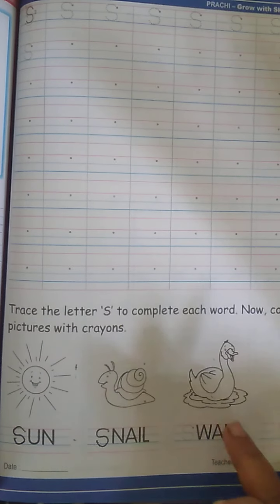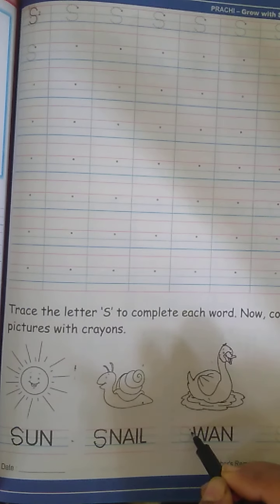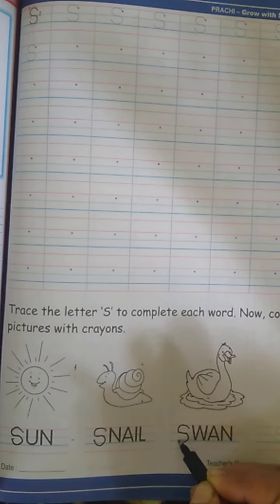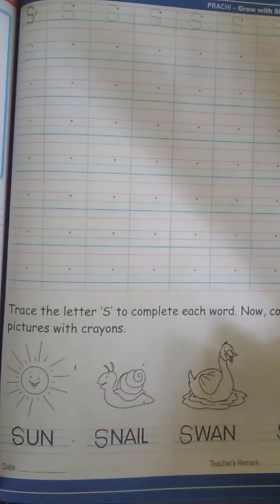S for swan. S-W-A-N. Swan. So, let's write the missing letter S. S for six. S-I-X-6.